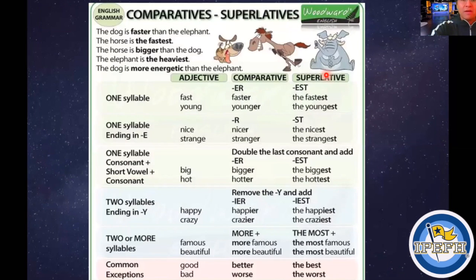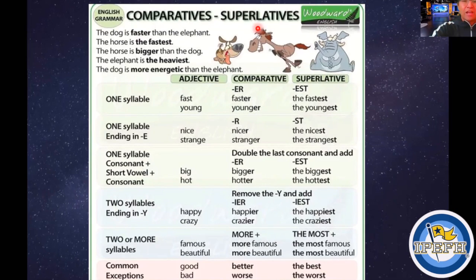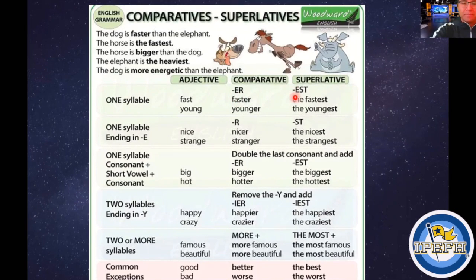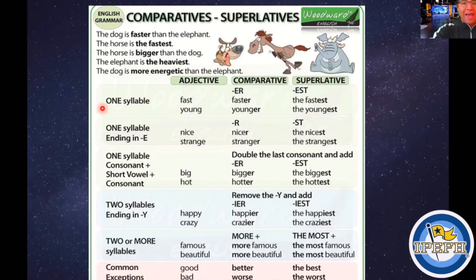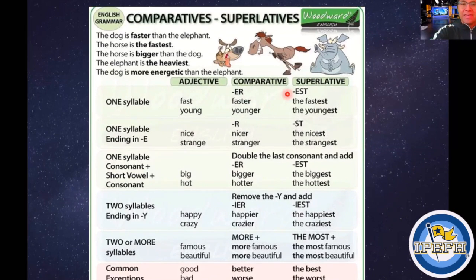In order to talk about the planets, it's very important that you consider comparatives and superlatives. Remember that a comparative should end in ER and that most superlatives end in EST. Here we have some rules. For one-syllable adjectives, we are going to add ER at the end of the adjective, and in the superlative we add EST.